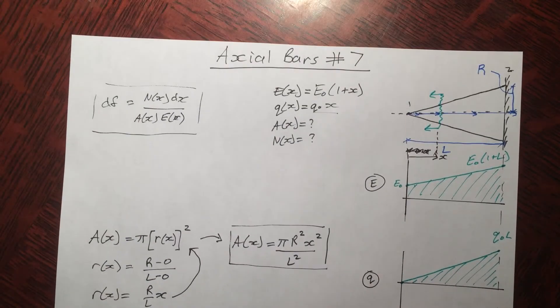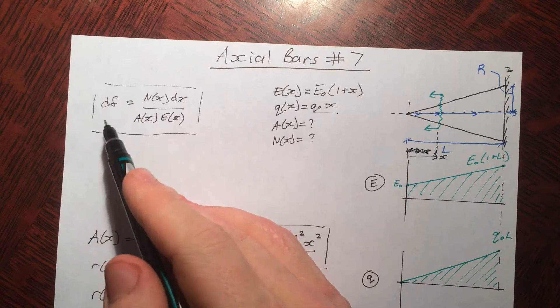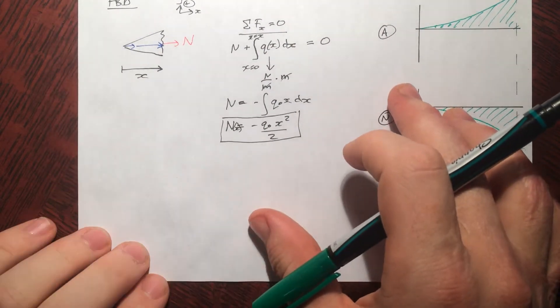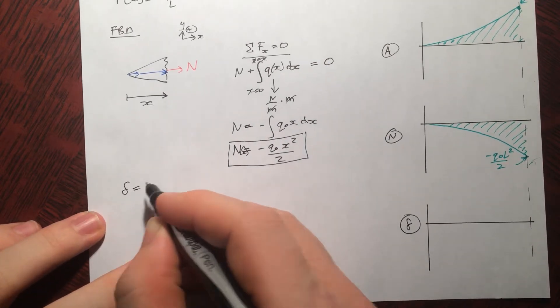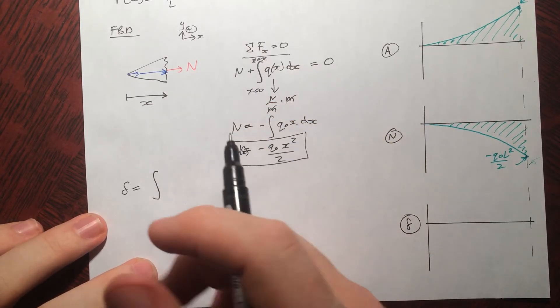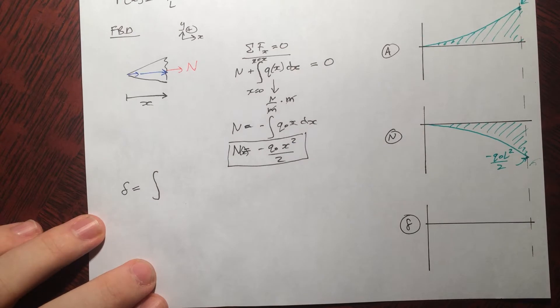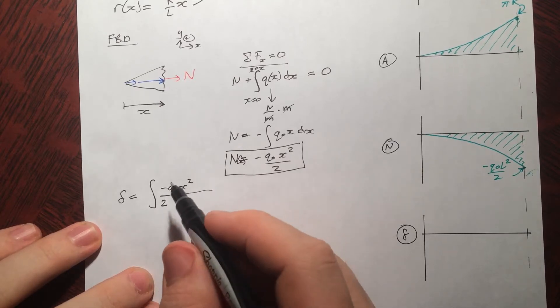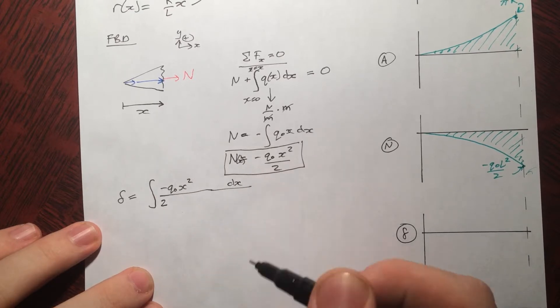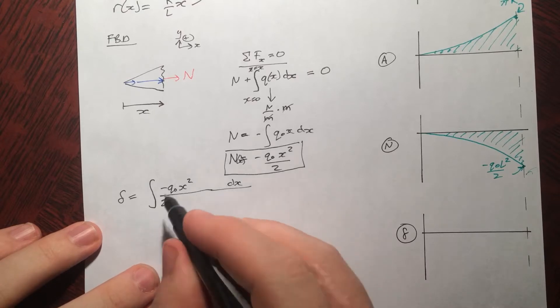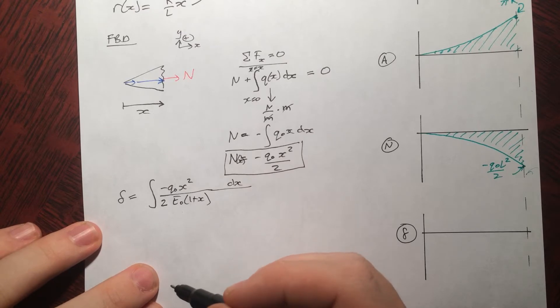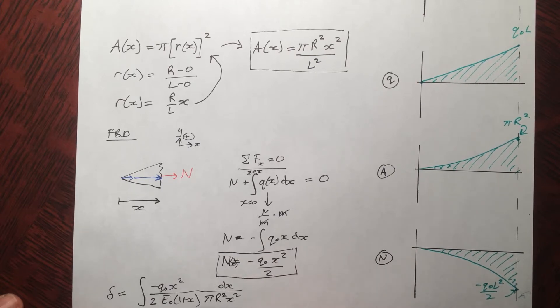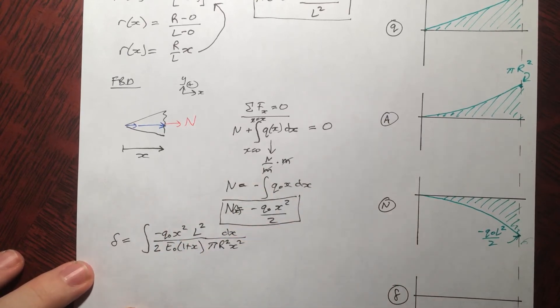Now we've found all the components of this equation that we need in order to integrate it to find our delta as a function of x or our total delta. If we just evaluate delta as a function of x at x equals l. So let's put all our components into that equation. Delta equals to the integral. Let's make it indefinite at first. We'll go put no limits on it. That's n as a function of x. Well that's negative q not x squared. Put the 2 on the bottom right away. Times a little bit dx. Let's put dx out here. Over e is a function of x. That's e not one plus x. And a is a function of x. That's this guy right here. So it's pi r squared x squared. Technically over l squared. But let's just flip l squared to the top.